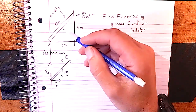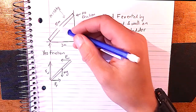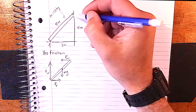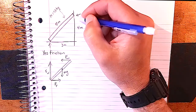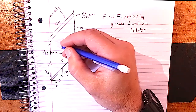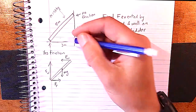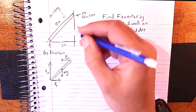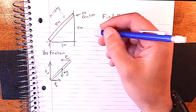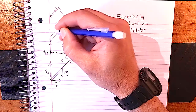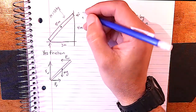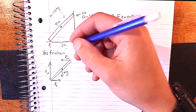Another common problem is a ladder leaning against a wall. Here a beam of mass 12 kilograms leans against a wall. The wall pushes back on the ladder perpendicular to its surface — that force acts to the left. At the bottom, friction prevents the ladder from sliding, so friction acts horizontally. There's also the normal force from the ground acting upward, and gravity acting down at the center of mass.